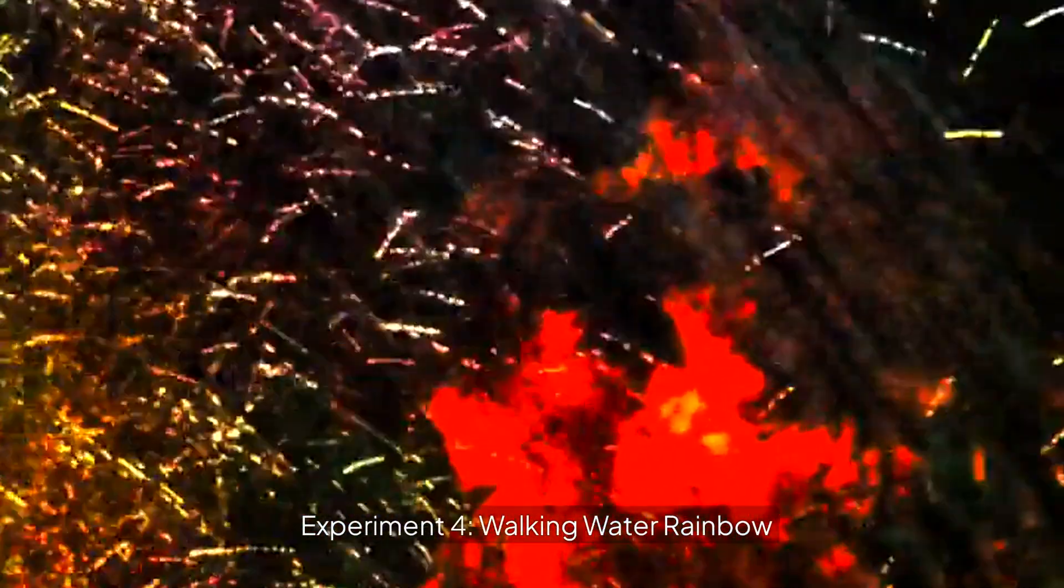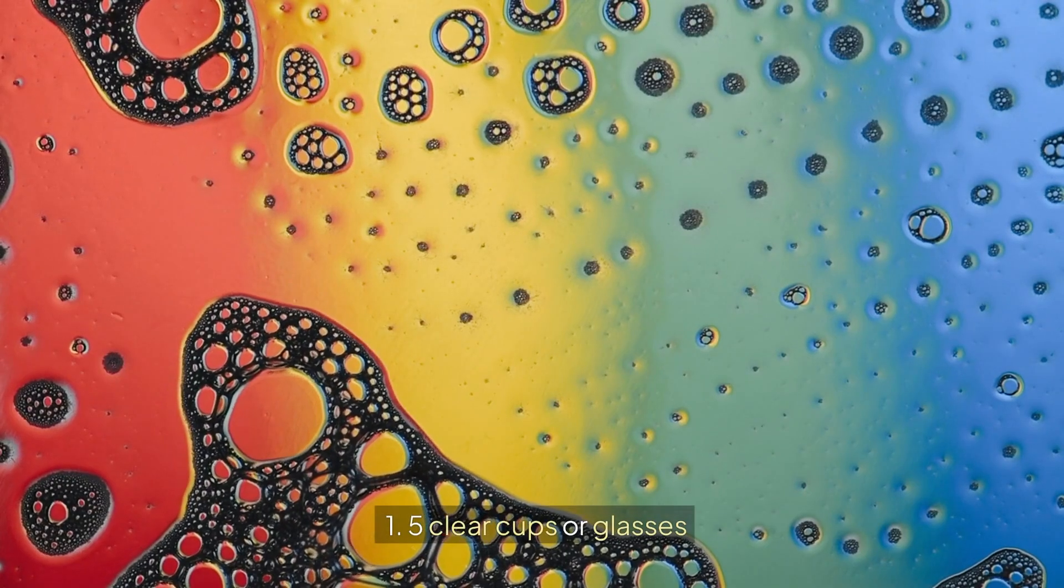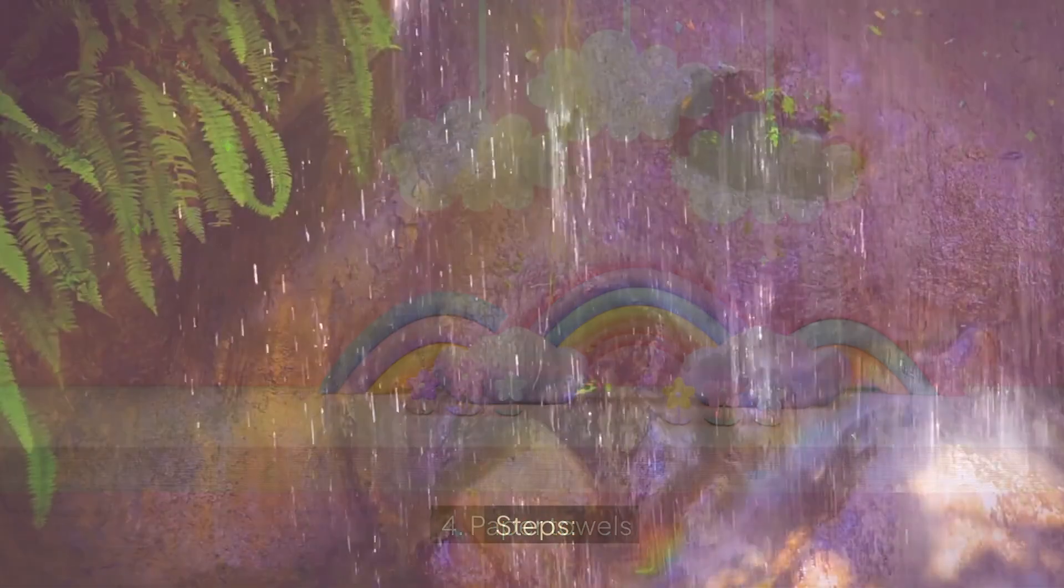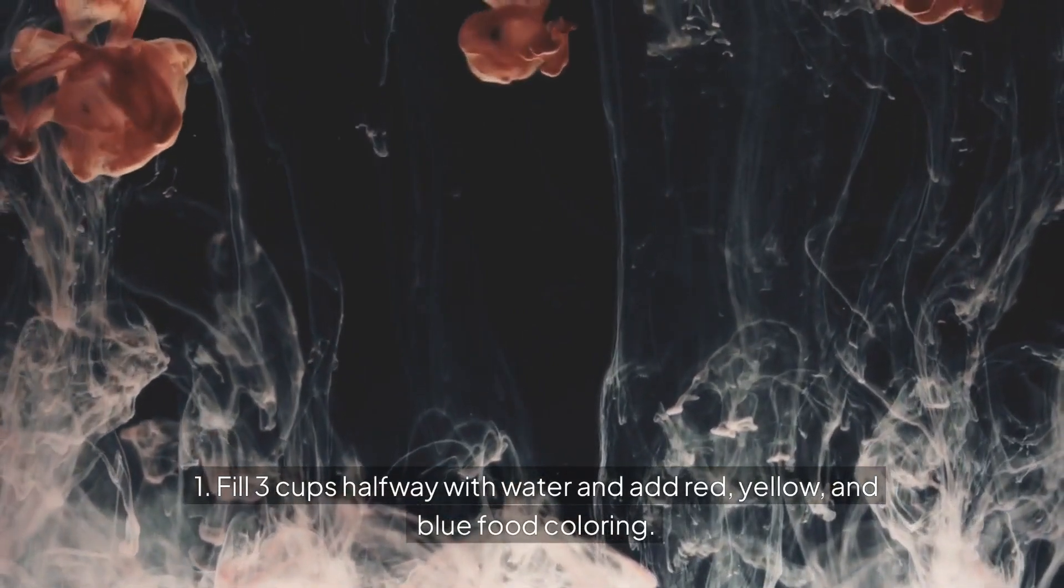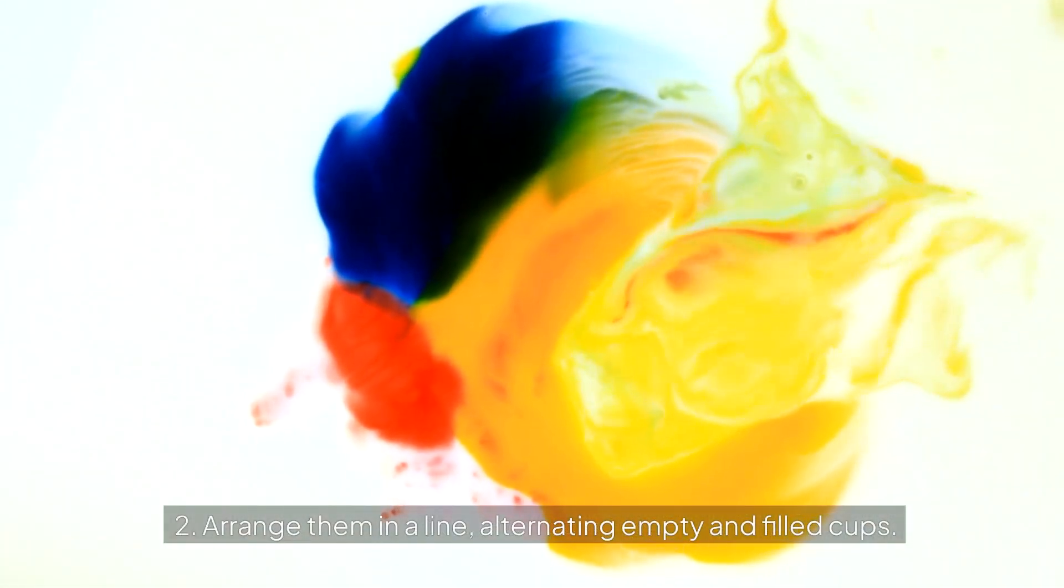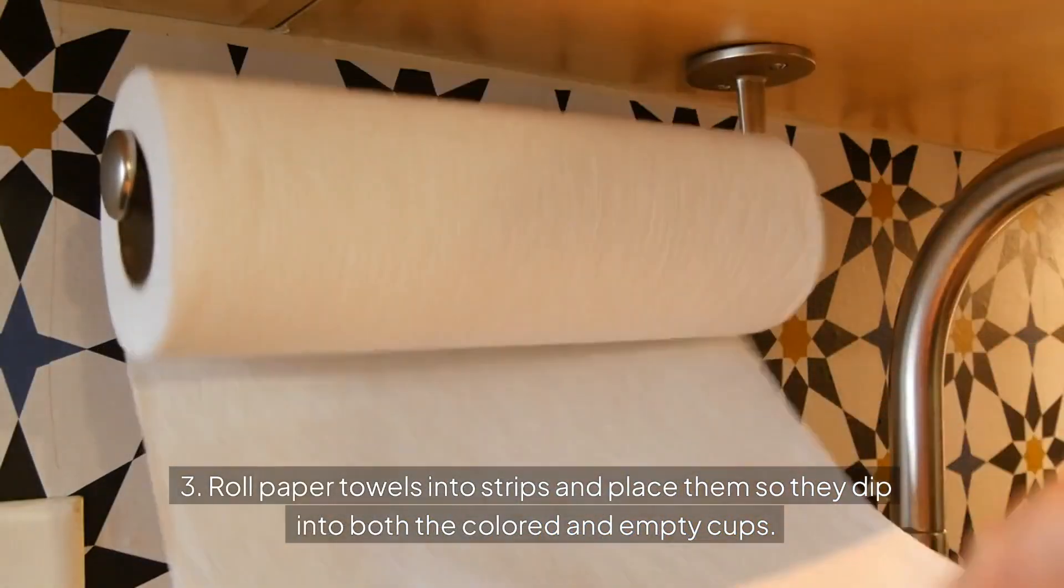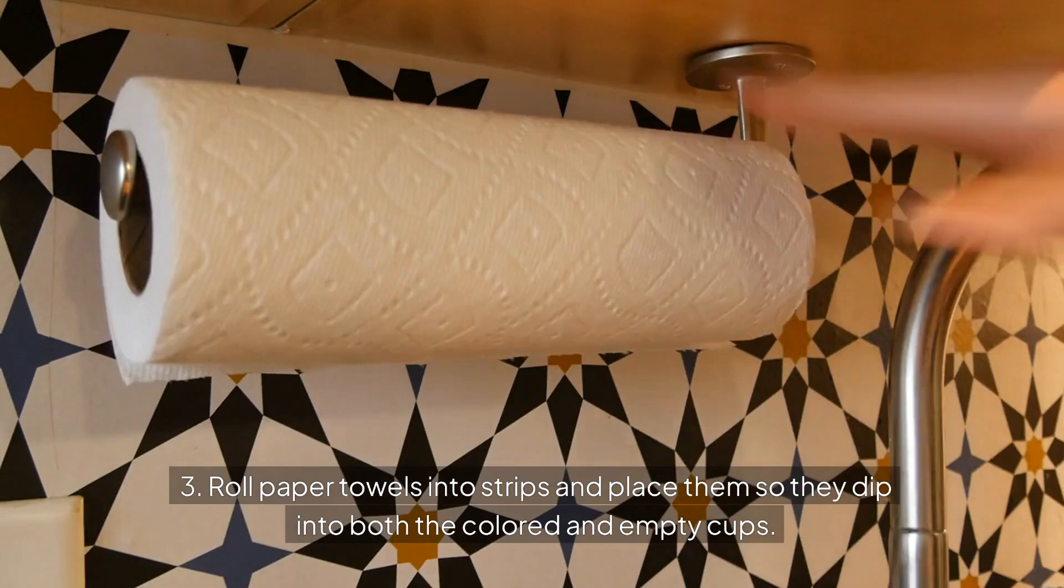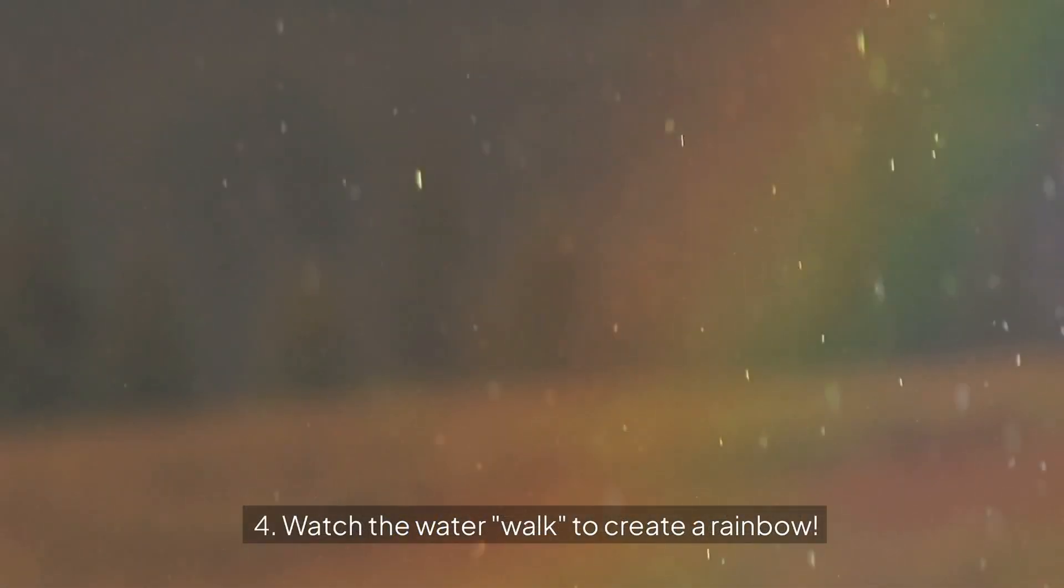Experiment 4: Walking water rainbow. Supplies: 5 clear cups or glasses, water, food coloring (red, yellow, blue), and paper towels. Steps: Fill 3 cups halfway with water and add red, yellow and blue food coloring. Arrange them in a line, alternating empty and filled cups. Roll paper towels into strips and place them so they dip into both the colored and empty cups. Watch the water walk to create a rainbow.